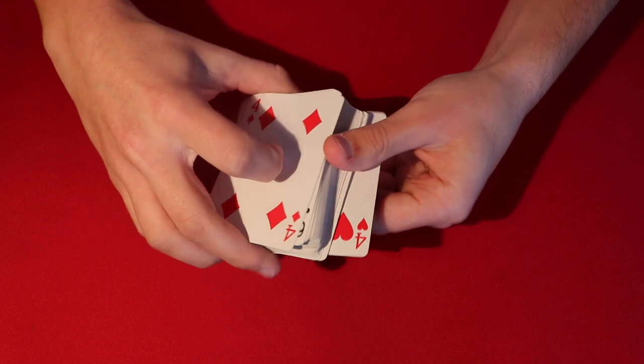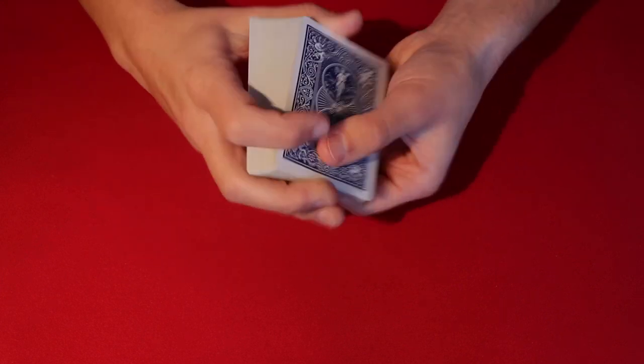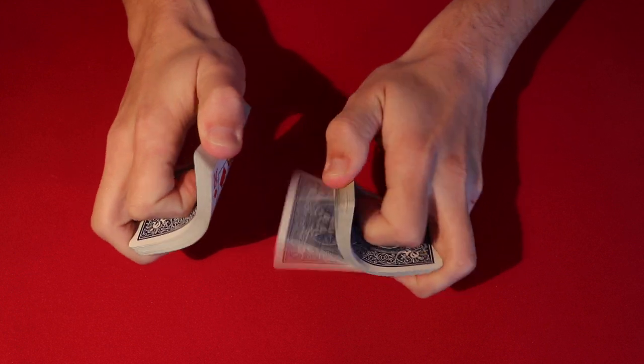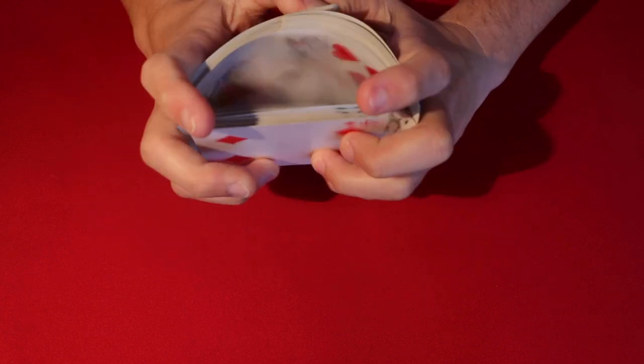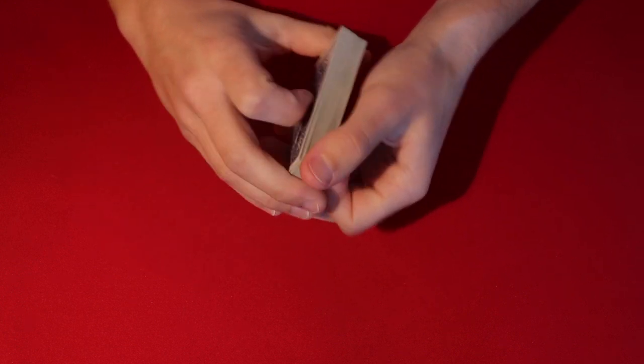So it looks like this. You have one on top and then one on the bottom. Okay, so then from here, the trick is pretty much set up. You can go ahead. You can shuffle the cards as long as you leave the four and the four on top and the bottom.